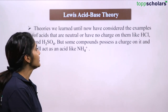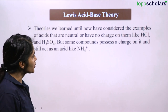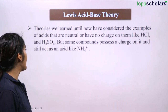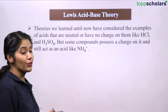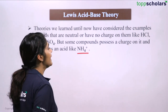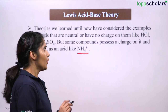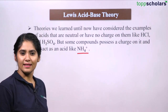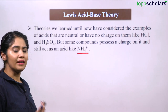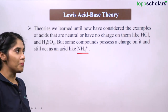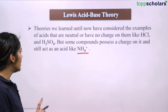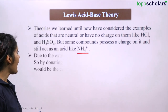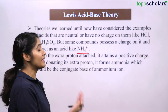The theories we learned so far have considered neutral acids like HCl and H2SO4. But some compounds possess a charge and still act as an acid, like NH4+. HCl and H2SO4 have satisfied each other's charges and exist in neutral form. When we talk about acids and bases, we usually use HCl and H2SO4 as examples, but we also need to consider charged compounds like NH4+, which carries a positive charge due to the extra proton attached.